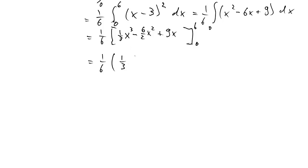Now we have 1 over 6 times [1/3 times 6 cubed minus 6/2 times 6 squared plus 9 times 6], and then minus all this evaluated at 0, which is going to be all 0 so it falls away. Here we can factor out a 6, and we are left with 1/3 times 6 squared minus 6/2 times 6 plus 9.